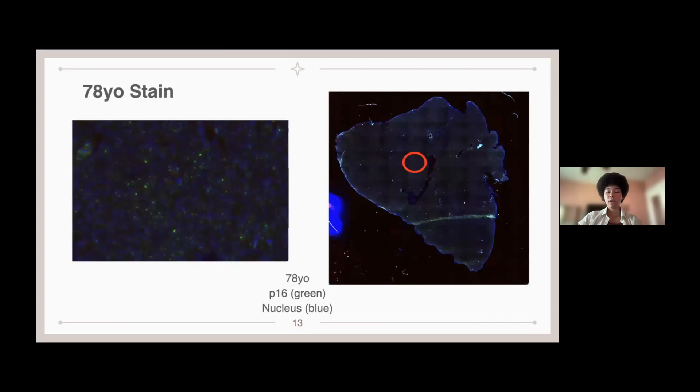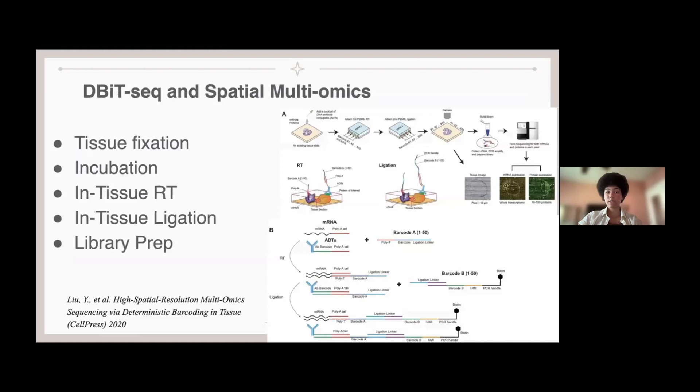And so once we had the immunofluorescence to pick the best areas, we were able to go forward and do the D-bit sequencing and spatial multiomics. D-bit sequencing is deterministic barcoding in tissue. The tissue is incubated with a mix of antibody-derived DNA tags that are designed to recognize a certain panel of proteins.